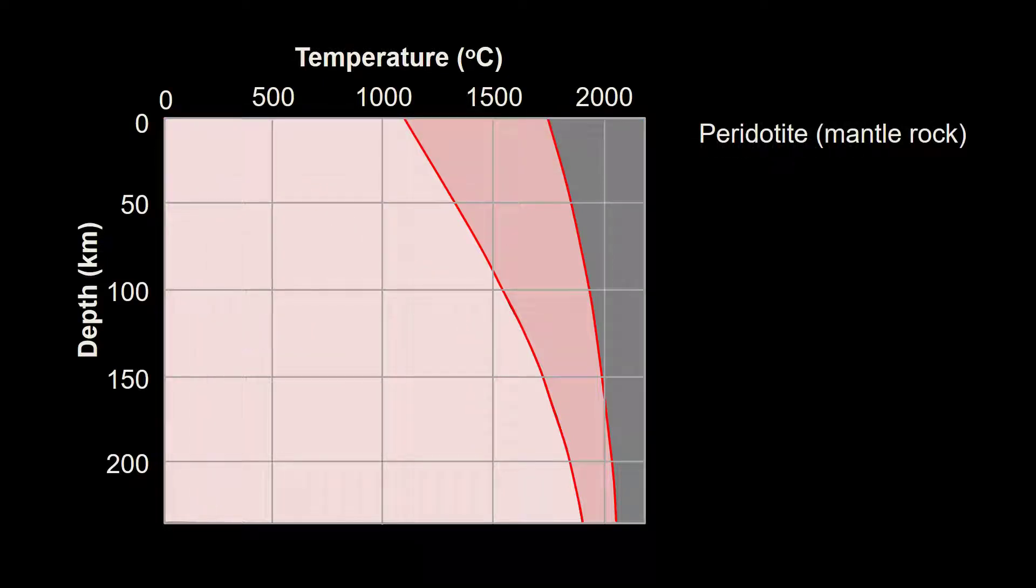The first thing to know is that this graph is drawn to represent melting conditions for peridotite, the typical composition of the mantle. There are several lines in this graph. Let's explain what they represent before we go any further.